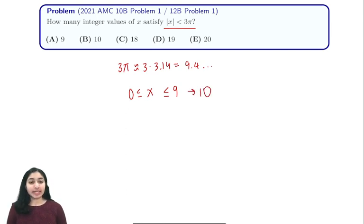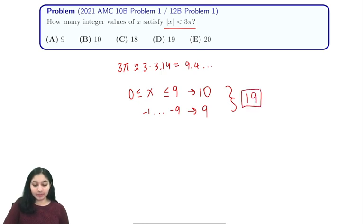Now if we look at when x is negative, x can be negative 1 through negative 9. These will all have absolute values of less than or equal to 9.4, so that gives us another 9 solutions and for a total of 19, and that's our answer which is D.